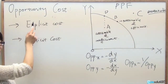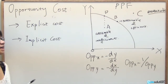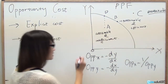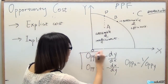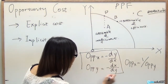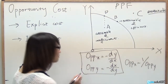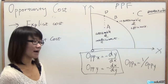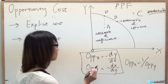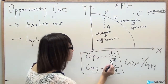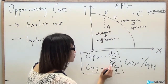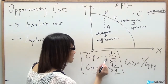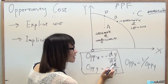For the opportunity cost calculation, the opportunity cost of X is the amount of Y that we give up to obtain a little bit more of X. This equals the negative of the first derivative of Y with respect to X, i.e., negative dY/dX.